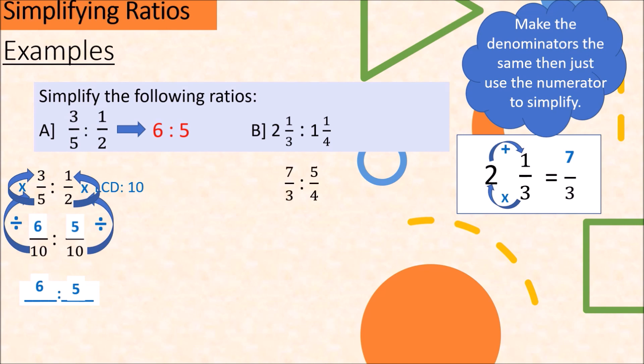Do the same with 1 and 1/4. You will get it as 5 over 4. So 2 and 1/3 is to 1 and 1/4 becomes 7 over 3 is to 5 over 4.